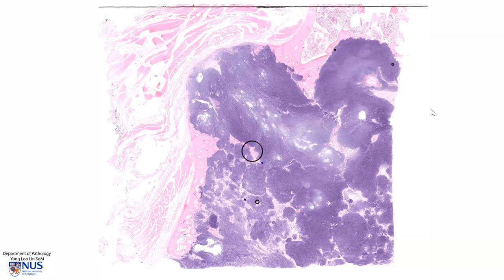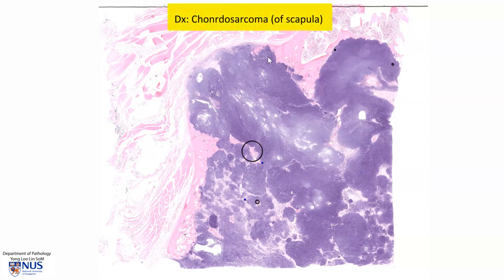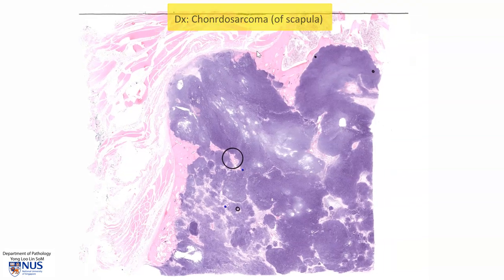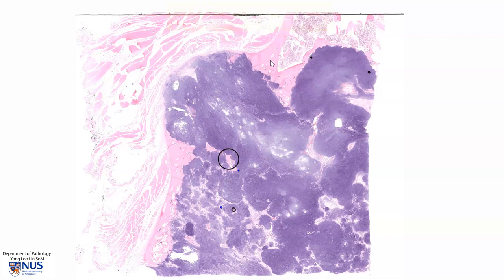Hello, this is a virtual microscopy slide showing a case of chondrosarcoma involving the scapula. Let's orientate ourselves at low magnification first. This is the outline of the bone, the scapula, and we're looking at this pink area which is the bony cortex.